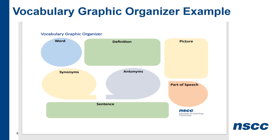This is an example of a graphic organizer you could use when you learn a new useful word. It can be helpful to help you remember the word. This graphic organizer helps you think about a word and its synonyms — words that have the same meaning — and antonyms — words that have a different meaning. It also gives you space to write your own definition, the part of speech (noun, verb, adjective, adverb), and your own sentence in a way that is meaningful to you.